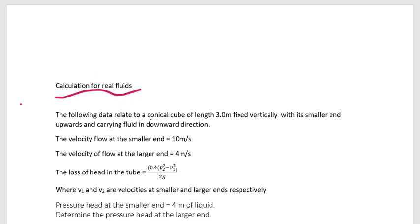The following data relate to a conical tube of length 3.0 meters fixed vertically with its smaller end upwards and carrying fluid in downward direction. The velocity flow at the smallest end is 10 m/s, the velocity flow at the larger end is 4 meters per second. The loss of head in the tube is 0.4(v2² - v1²)/2g.